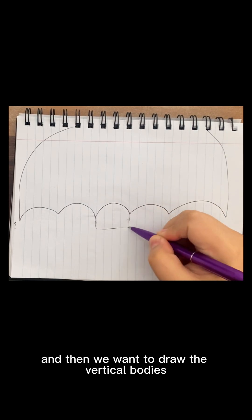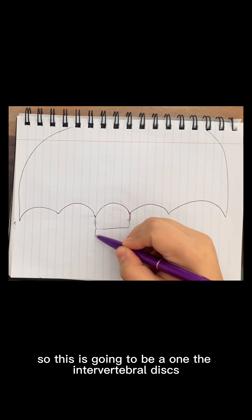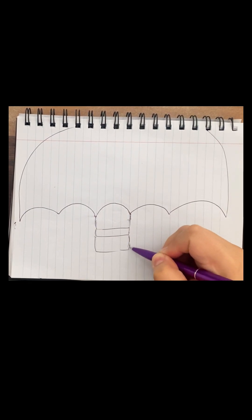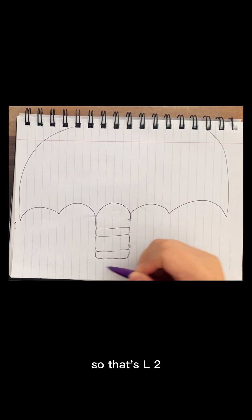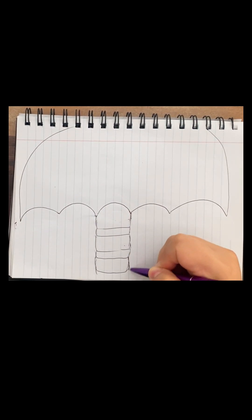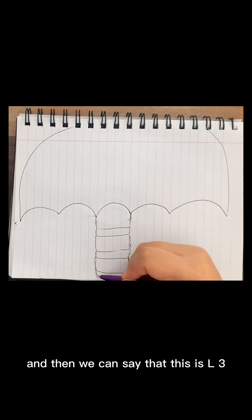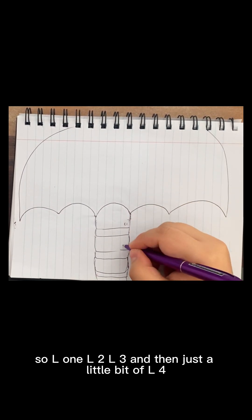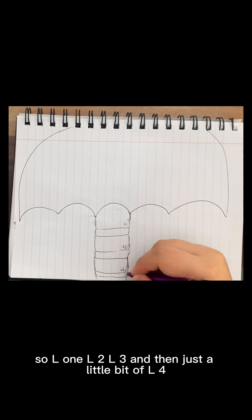Then we want to draw the vertebral bodies. So this is going to be L1, the intervertebral discs. So that's L2. And then we can say that this is L3. So L1, L2, L3 and then just a little bit of L4.